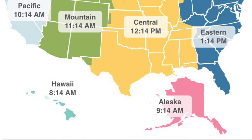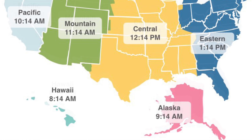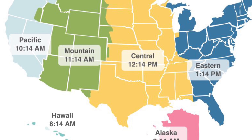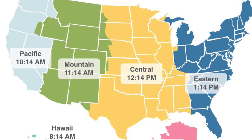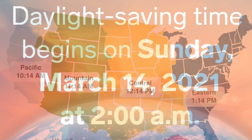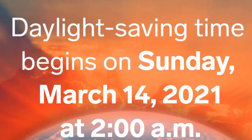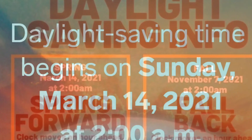Hawaii is 8:14 AM and Alaska is 9:14 AM. Hawaii and Alaska observe daylight saving time in America. Daylight saving time starts March 14 at 2 AM, and ends November 7 at 2 AM.